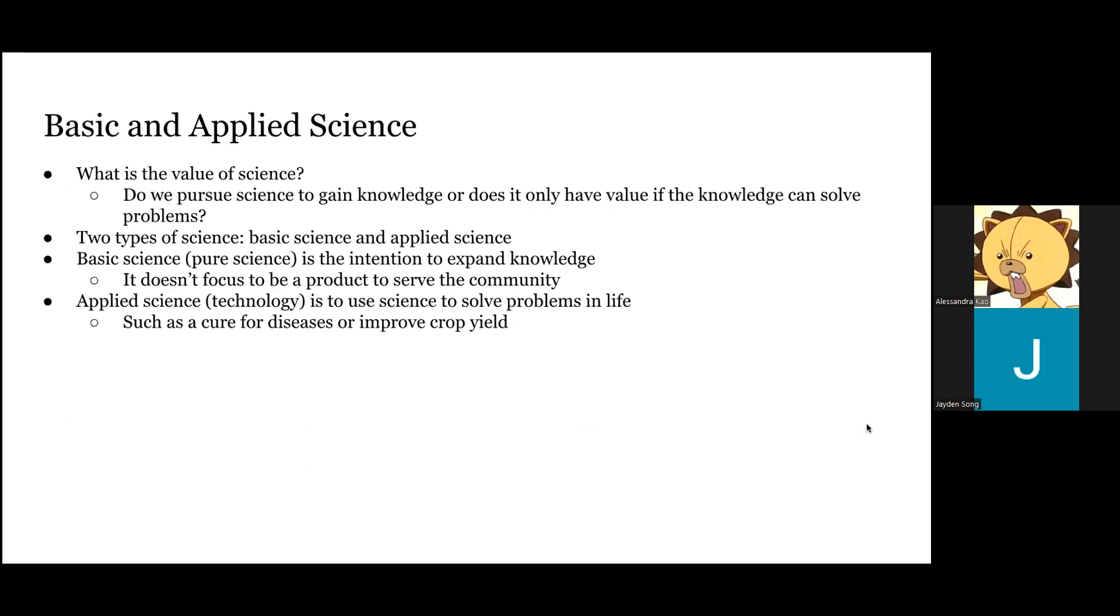Basic and applied science. What is the value of science? Do we pursue science to gain knowledge, or does it only have value if the knowledge can solve problems? There are two types of sciences: basic science and applied science. Basic science, also known as pure science, is the intention to expand knowledge. It doesn't focus on being a product to serve the community.